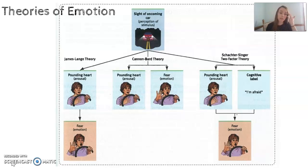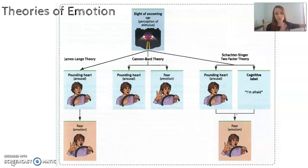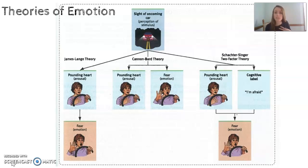The following theory is the Cannon-Bard theory. This theory says you can't separate the change in the body from what the emotion is. Walter Cannon was the man critiquing the James-Lange theory. He said, maybe your heart is racing — but how do you know you're not happy? Or how do you know you're not angry? How does heart racing specifically lead to fear?